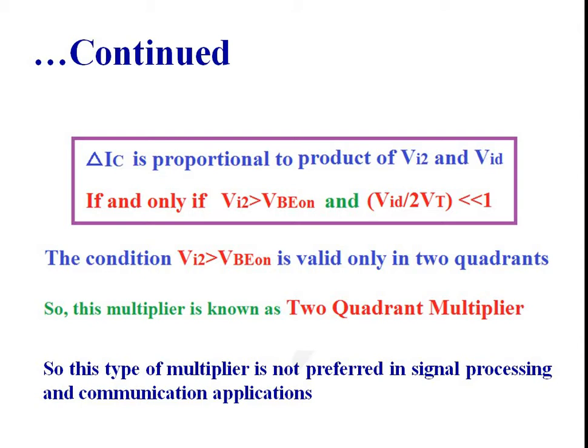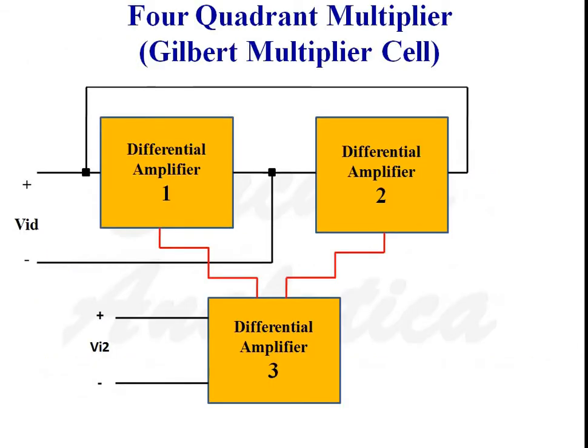The condition Vi2 greater than VBE(on) is valid only in 2 quadrants, so this multiplier is known as a 2-quadrant multiplier. This type of multiplier is less preferred in signal processing and communication applications. A 4-quadrant multiplier, known as the Gilbert multiplier cell, consists of 3 differential amplifier pairs.